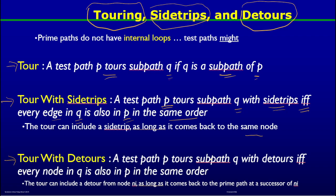A test path p tours sub-path q with detours if and only if every node in sub-path q is also in p in the same order. This is the key difference: with side trips we talked about edges, whereas with detours we talk about nodes. In simple terms, a tour can include a detour from node n_i as long as it comes back to the prime path at a successor of n_i.